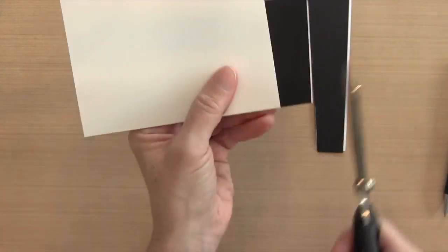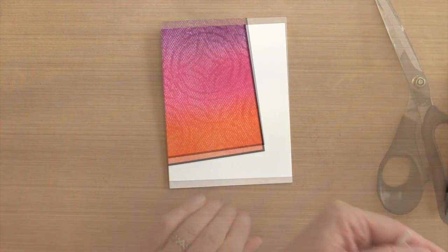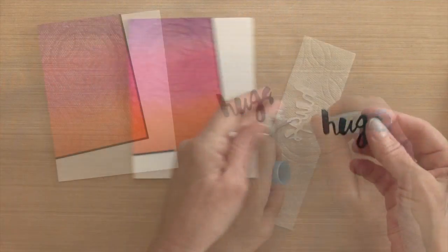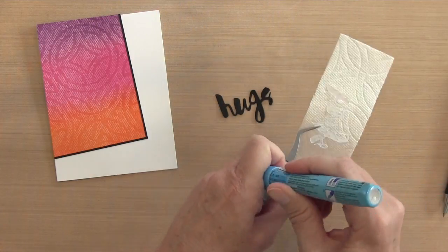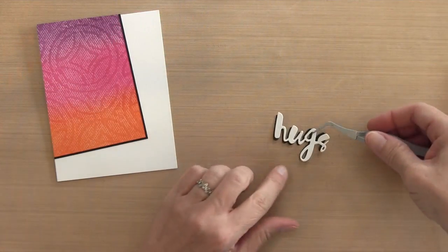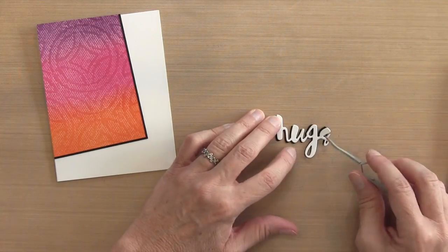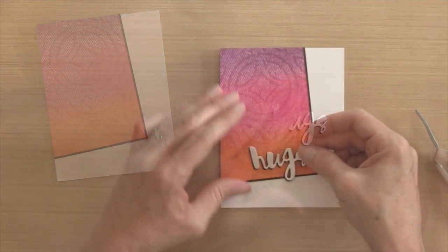I die cut the word hugs out of both black and white cardstock and I'm going to layer these up so I get some dimension. I'm just going to put some two-way glue on the back of the white hugs, and then I'm going to position it just a little bit northeast of the black so a little bit is showing on the left and the bottom and then the bottom left corner.